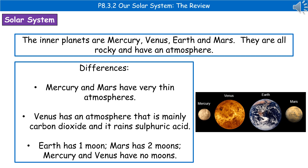All of the inner planets are rocky and they all have an atmosphere of some description. There are some key differences between them, however. Mercury and Mars have very thin atmospheres, and the atmosphere on Venus is mainly carbon dioxide and it rains sulphuric acid, so neither of them are particularly hospitable atmospheres to be around.